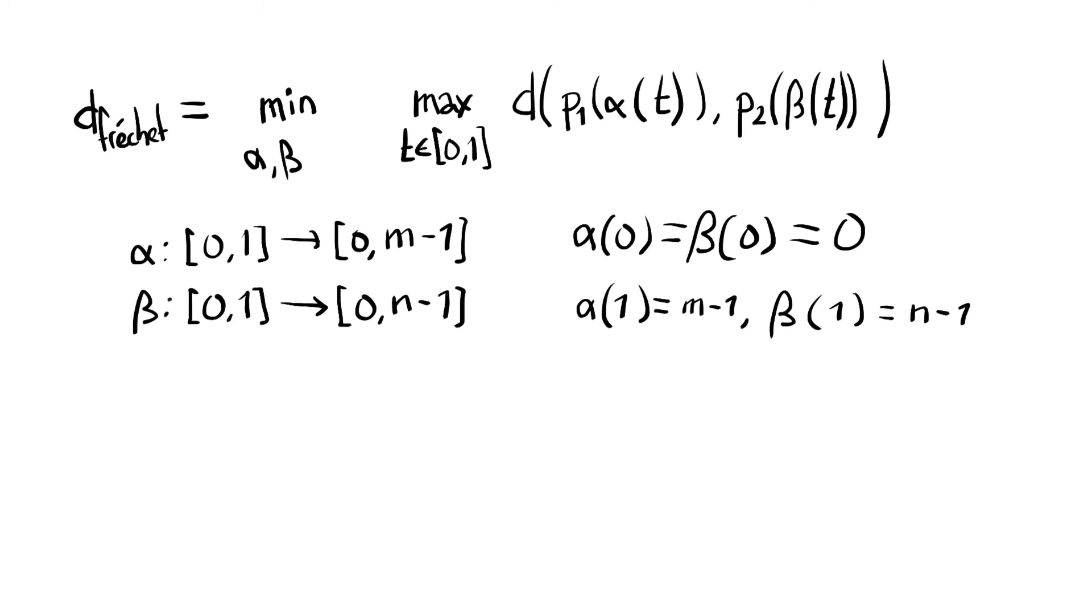What would happen if we forget about this condition and calculate this minimum without it? What would be the value of the Fréchet distance? Well I should find the point on p1 that is closest to some point on p2 and then just use alpha and beta to always give those two points and then I'm really back at our very first definition of distance between polylines.